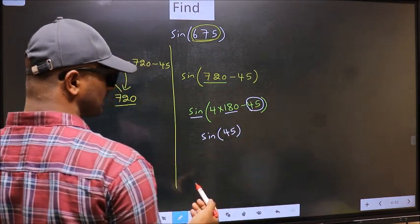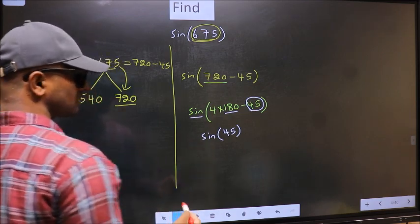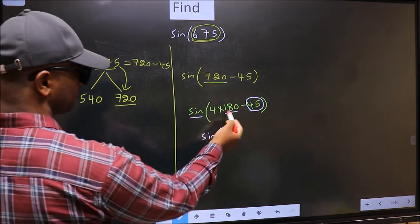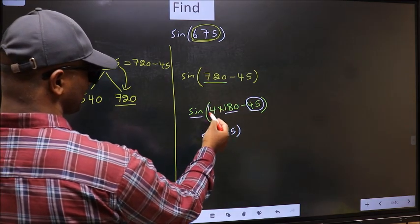Now the question is, will we get here plus or minus? To answer that, we should look at the number before 180. That is 4.